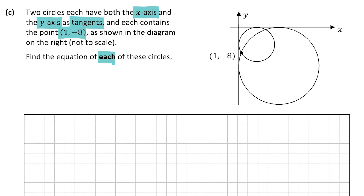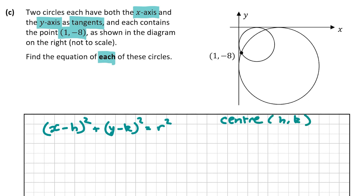To find the equations, I'll write out the general equation of a circle: (x minus h) squared plus (y minus k) squared equals r squared, where the centre is (h, k) and the radius is r. For both circles, because they have both axes as tangents, the centre's x and y coordinates will both equal the radius — but one will be negative.